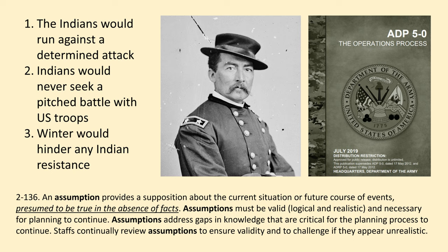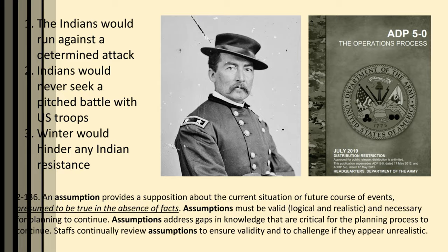Based on his experience in the southern plains in the late 1860s and early 1870s, Sheridan and the officers of his command made several critical assumptions. One, they believed the Indians would not stand against organized forces — in any situation where U.S. forces met Indians, no matter the numbers, the Indians would run. Two, Indians would never seek battle with U.S. troops unless the soldiers were in proximity to their village. Three, officers were convinced that even the meager opposition ordinarily offered by the Indians would be significantly reduced in the harsh Northern Plains winter when the Indians were struggling to survive.